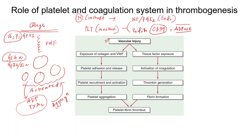Once there is vascular injury, there is also tissue factor exposure. This leads to activation of coagulation through factor VIIa. There is further activation of the coagulation pathway, ultimately leading to thrombin generation and fibrin formation. Thrombin converts fibrinogen to fibrin, and together fibrin and platelets form the platelet-fibrin thrombus.